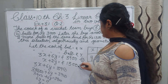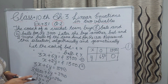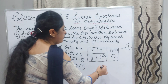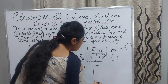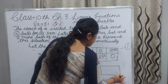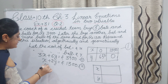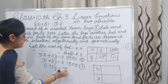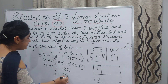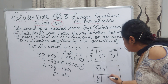Algebraically we have shown the first and second equations. Now I am making the second table. We will put the values into our second equation, X plus 2Y equals 1,300. Let X be 0: then 2Y equals 1,300, so Y equals 1,300 divided by 2, which gives 650. If X is 0, Y is 650.